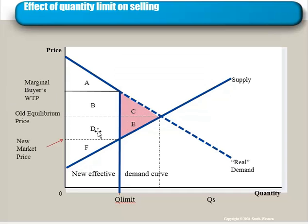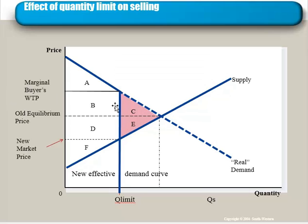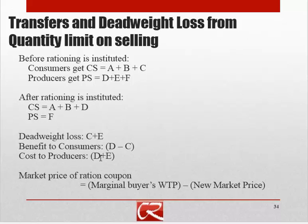There's a redistribution element as well. By pushing down the price, or keeping the price from rising, the rationing redistributes economic welfare from sellers to buyers. Area D is the amount of economic welfare redistributed from sellers to buyers. As for how much the ration coupon is going to be worth: the marginal buyer values the good at a certain amount, and the ration coupon allows them to buy the good for the lower market price. So the ration coupons are worth the distance between the marginal buyer's willingness to pay and the new market price.